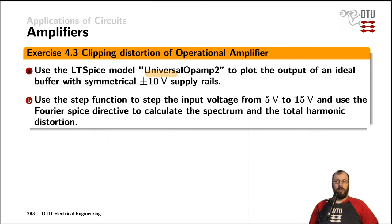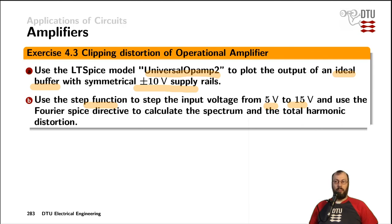With another SPICE model called the universal op-amp 2, you can attach supply rails — for example, plus-minus 10 volt supply rails — to an operational amplifier and configure it as an ideal buffer, also called a voltage follower. Furthermore, using the step function in SPICE, you can step the input voltage between 5 volts and 15 volts and see what happens when you drive the amplifier into clipping. It may be very interesting to look at the Fourier results in the output file, and the simulator also calculates the total harmonic distortion for you.